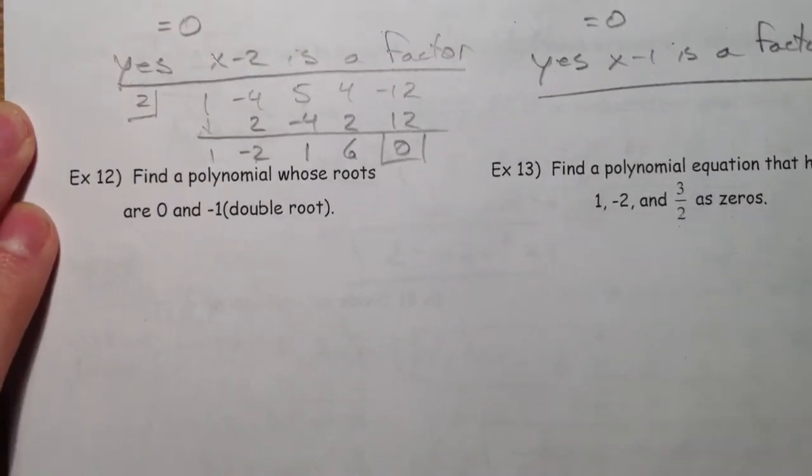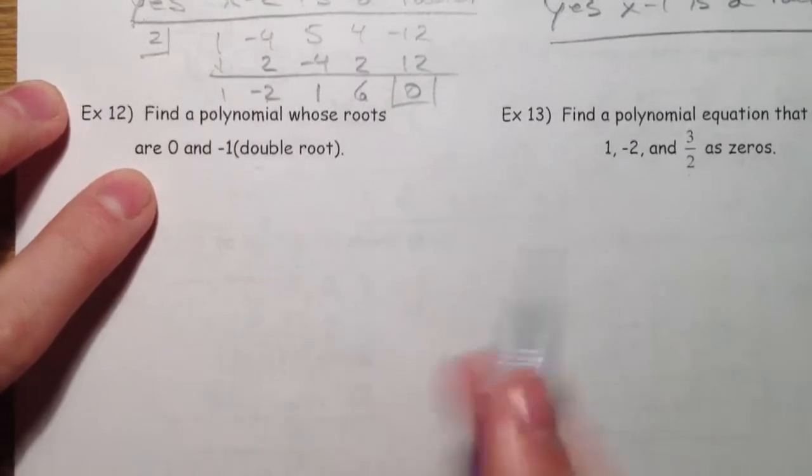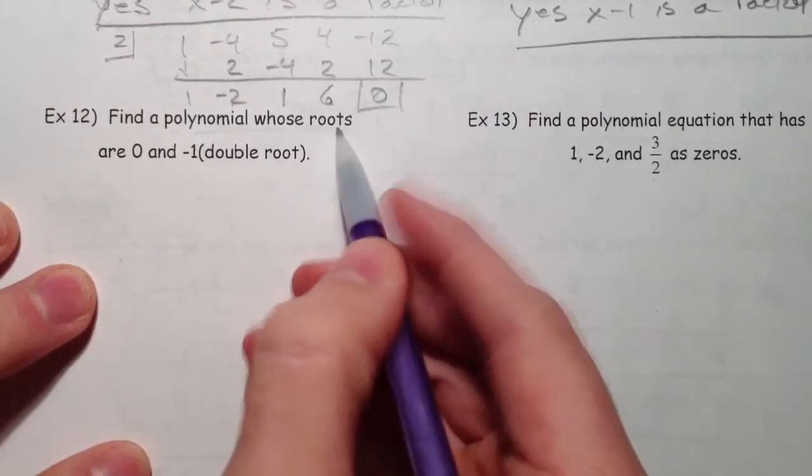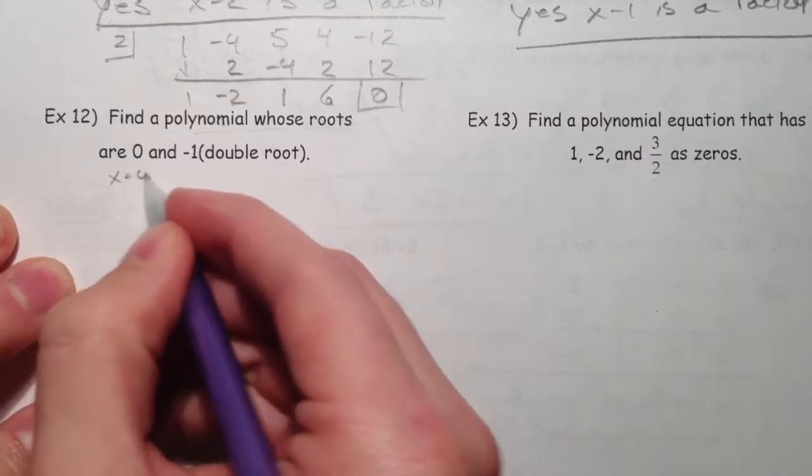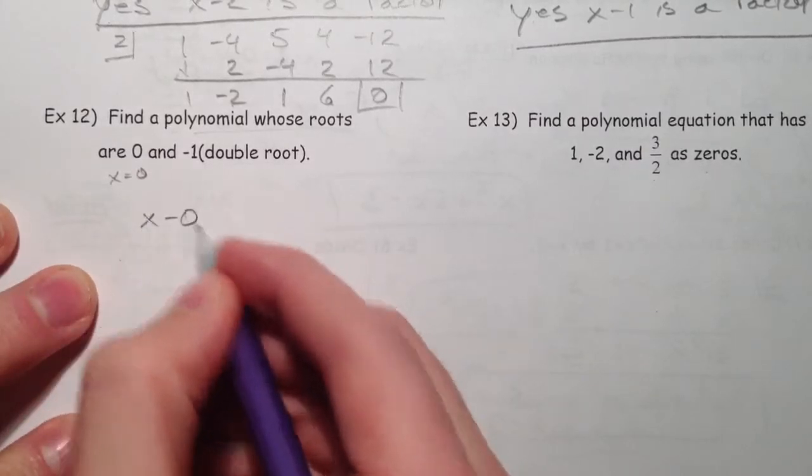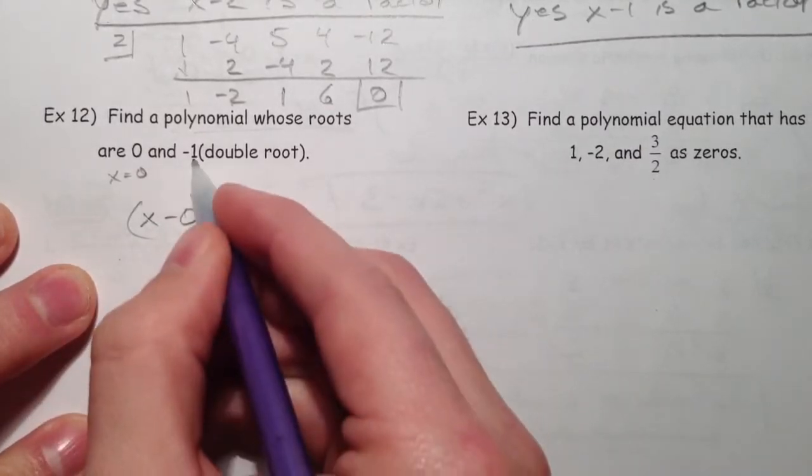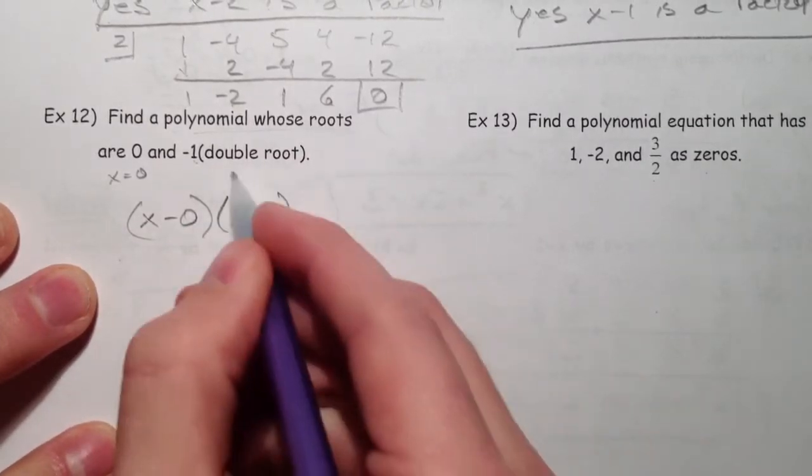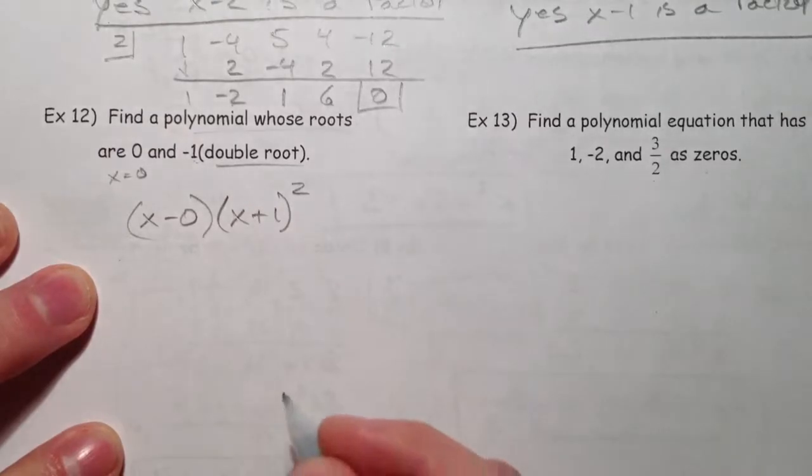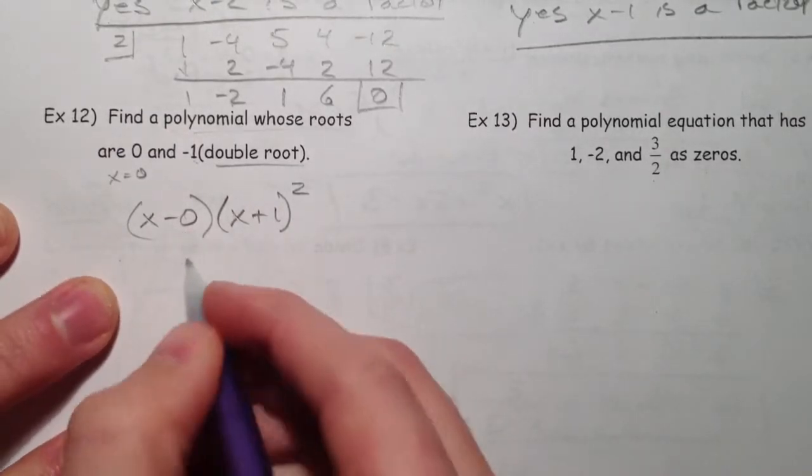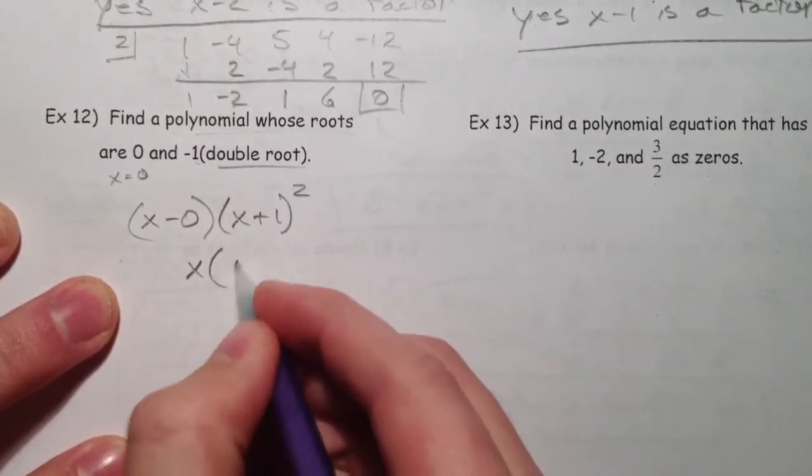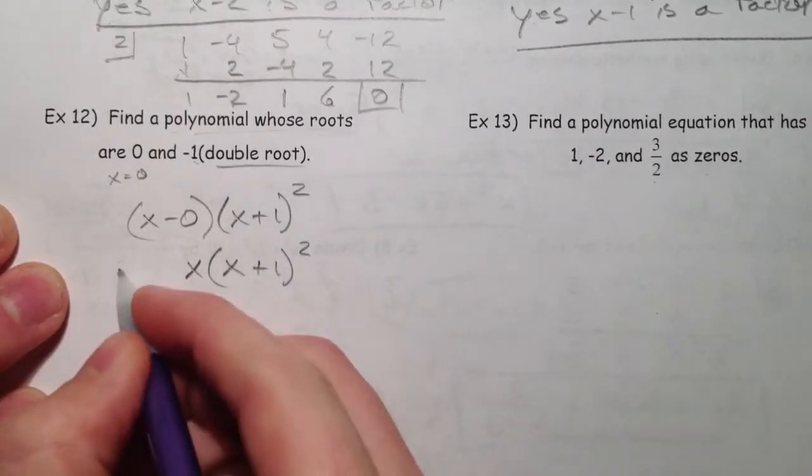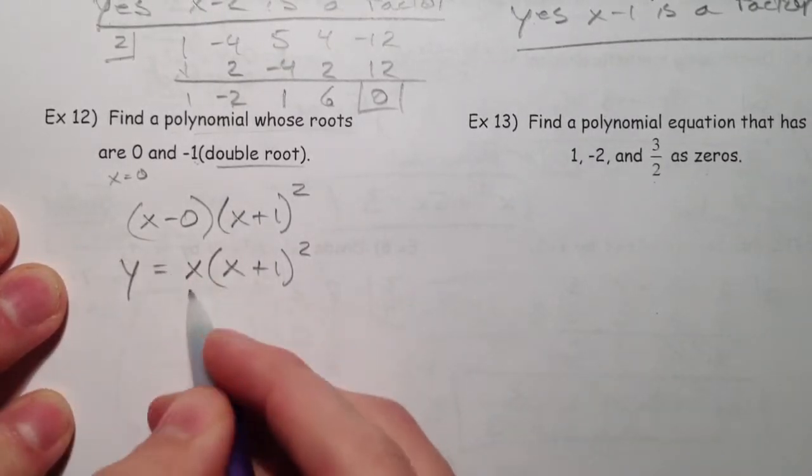Find a polynomial whose roots are 0 and negative 1. So this is kind of backwards of what we've been doing. Polynomials whose roots are, well, so that's x equals 0, so x minus 0 is a factor. And x plus 1 is a factor. Now it says a double root, so that has to be squared. And we don't usually write x minus 0, so we could just write that as x. So we could say y equals that.